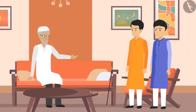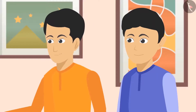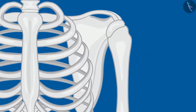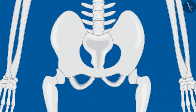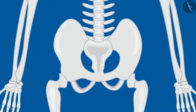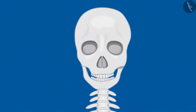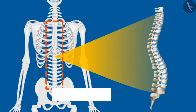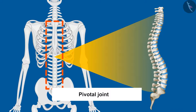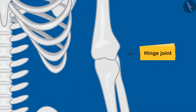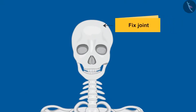'Now tell me, how many types of joints are there in our body?' 'Chacha ji, there are many types of joints. Ball and socket joints attach the bones of our hands to the shoulders, and thigh bones to the hips. Pivotal joints keep our head attached to the spinal cord. Other than these, we also have hinge joints and fixed joints.'